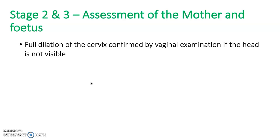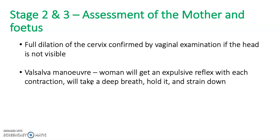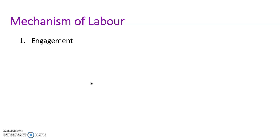For assessment of mother and fetus in stages two and three, full dilation of the cervix is confirmed by vaginal examination if you cannot see the head of the fetus. Women will experience an expulsion reflex with each contraction — they take a deep breath, hold it, and strain down; that's what women mean when they say they want to push. In the mechanism of labour, engagement occurs where the head normally enters the pelvis in the occiput transverse position, as the transverse diameter is the greatest. Descent then occurs during the active phase of the second stage, aided by voluntary use of abdominal muscles and the Valsalva manoeuvre.